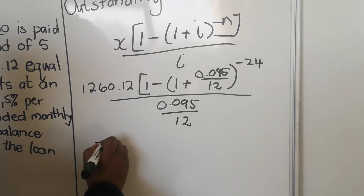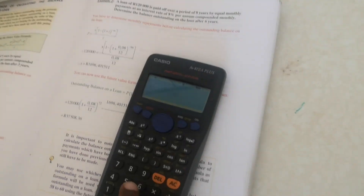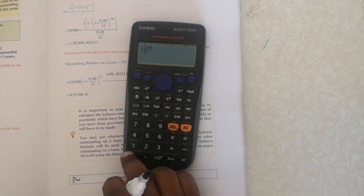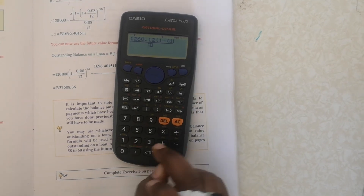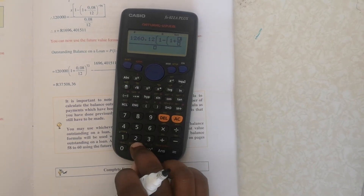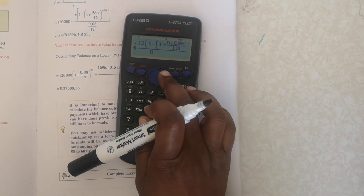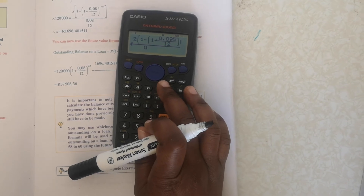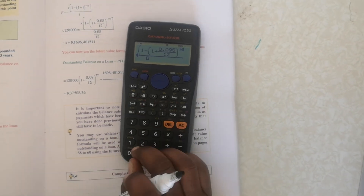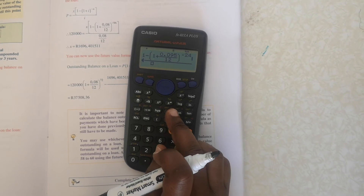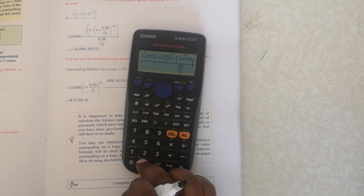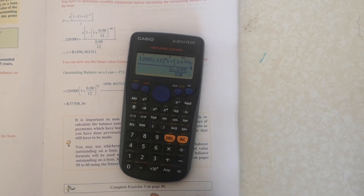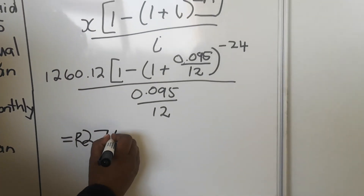Punch everything into your calculator: fraction 0.095 over 12, then open bracket, 1 minus open bracket, 1 plus fraction 0.095 over 12, close bracket, to the power of negative 24. That's where most people make a mistake — forgetting to close that bracket. If it gives an error, go back and check which bracket is not closed. Divide by 0.095 over 12, and your answer is R27,444.929.